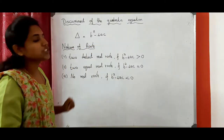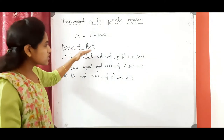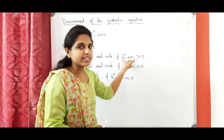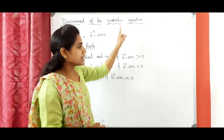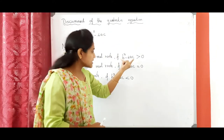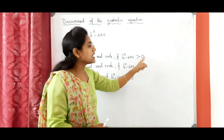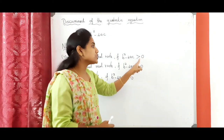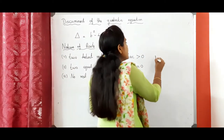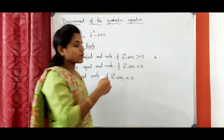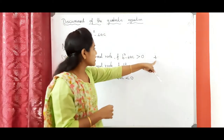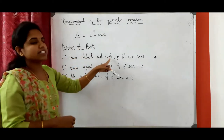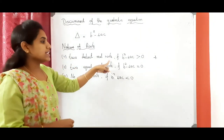Then what about the nature of the roots? Nature of the roots means b squared minus 4ac — that is the discriminant of the quadratic equation. So, if this discriminant value is greater than 0 — meaning a positive value — then the nature of the roots is two distinct real roots.